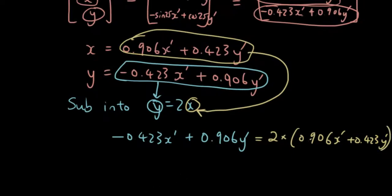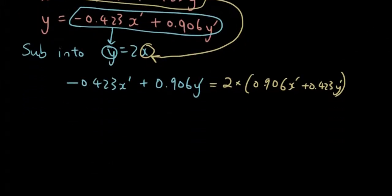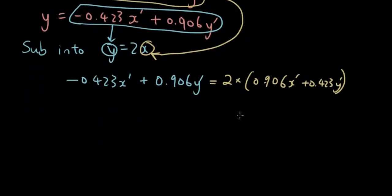Okay, and now let us try and simplify this. On the right hand side, 2 times that, so I will get 1.812x' plus 0.846y'.